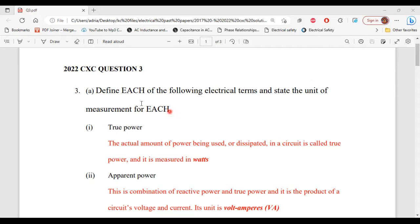Part A. It says define each of the following electrical terms and state the unit of measurement for each. Part one, true power. So the true power is the actual amount of power being used or dissipated in a circuit and its unit is watts.